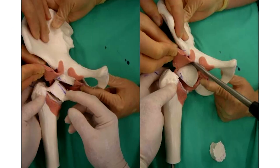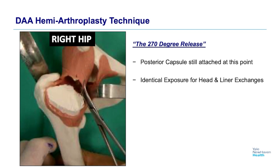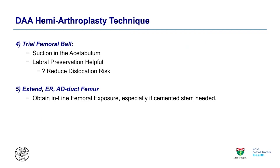Here's an example of taking the head and neck out. Next, think about what I call the 270-degree capsule release. The red is showing you the calcar and surrounding bone of the ring of the femoral neck. I use the same approach for head and liner exchange. The release in yellow is anteriorly, medially, and laterally, and sometimes a one o'clock release to the tip of the greater trochanter to elevate this.